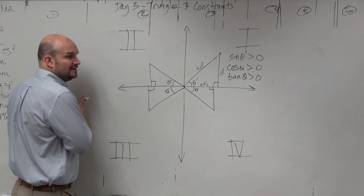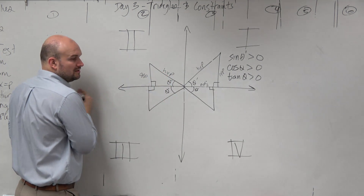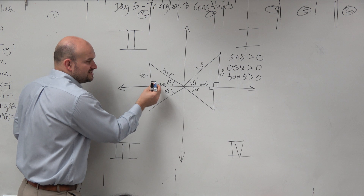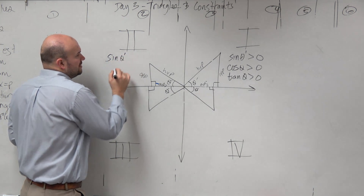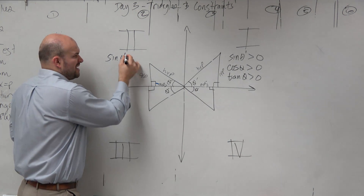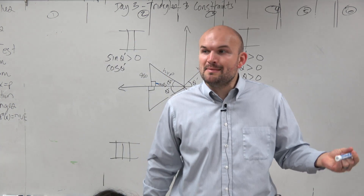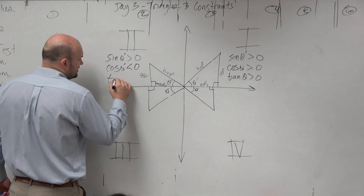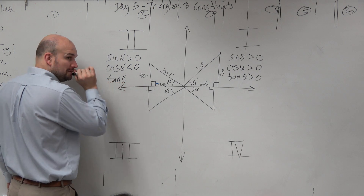What becomes interesting is if you look at this — we still have opposite and we still have our hypotenuse, but now what happens to our adjacent? Adjacent is now going to the left, so the adjacent side is negative. That's important. Does that change the sine of this reference angle? Opposite over hypotenuse — still positive. But now the cosine of theta is negative adjacent over hypotenuse, which is now negative. And tangent of theta prime is opposite over a negative adjacent, which is also negative.